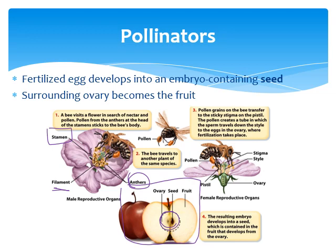The bee then goes to another plant of the same species and transfers the pollen grains on its legs to something called the stigma. The pistil is the female reproductive organ of the plant, and the stigma is very sticky — basically a sticky landing pad that collects pollen. It's connected to the style, a tube-like structure leading from the stigma straight to the ovary, where the pollen fertilizes the egg, forming an embryo that becomes a seed.